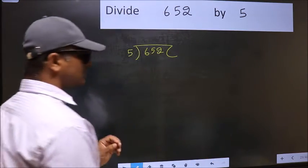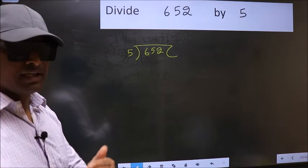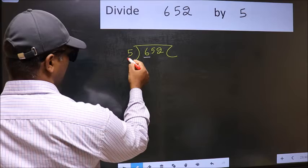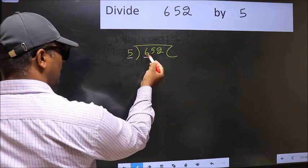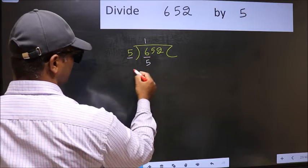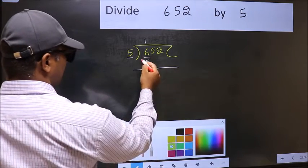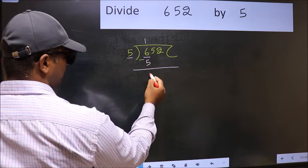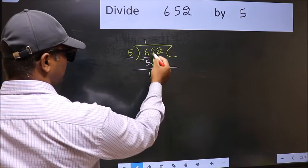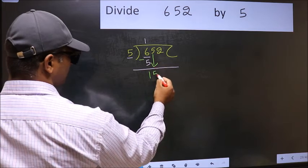This is your step 1. Next. Here we have 6 and here 5. A number close to 6 in 5 table is 5 once 5. Now you should subtract. 6 minus 5, 1. After this, bring down the beside number. So 5 down.